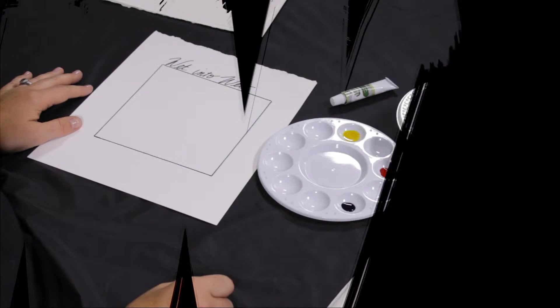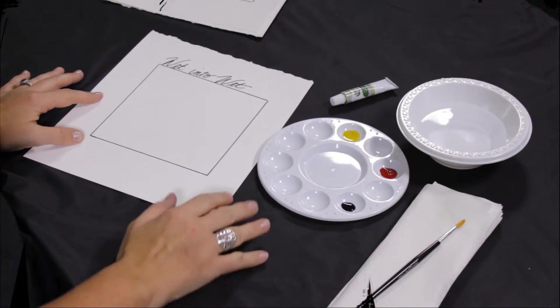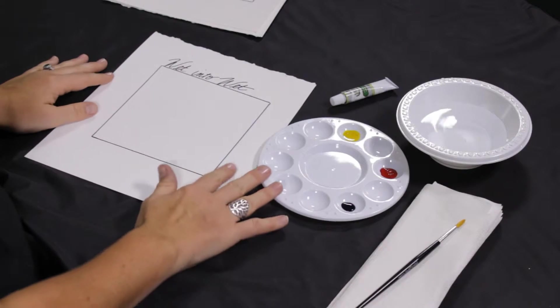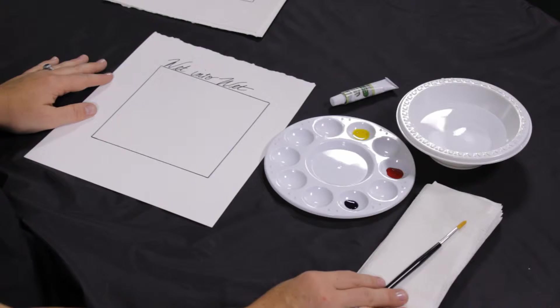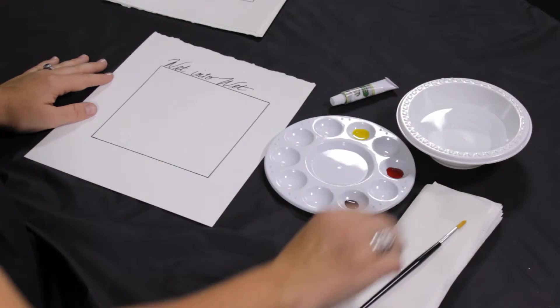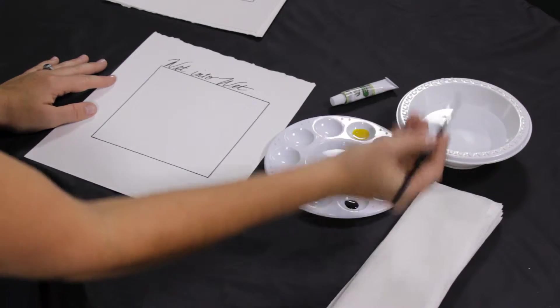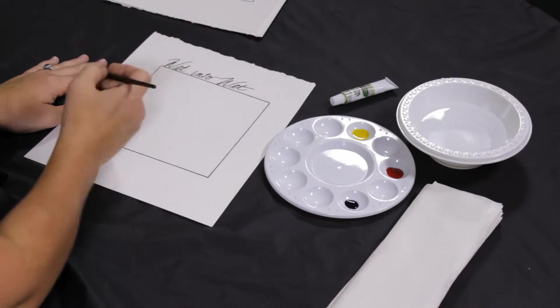Okay, so let's get started and set up our workstation. First thing you want to do is if you're a righty, you want to place all of your necessary materials on the right side. You want to put your palette, your water, and your napkins all on the right side so you're not dragging paint over your painting.